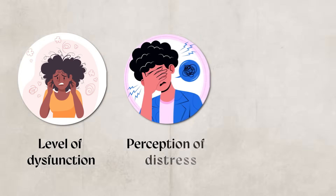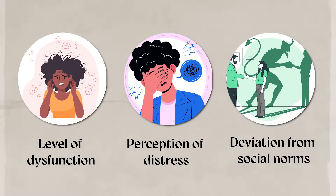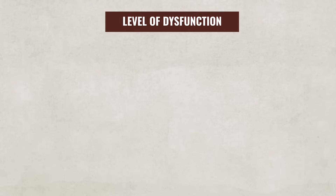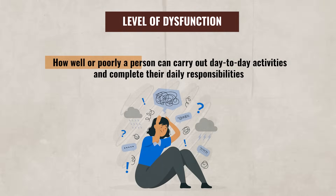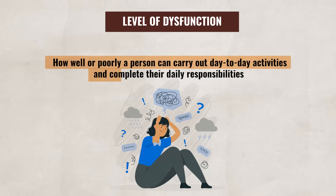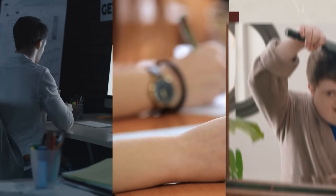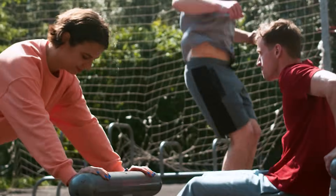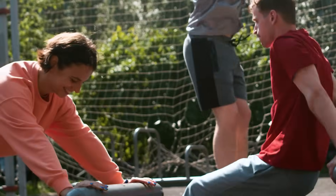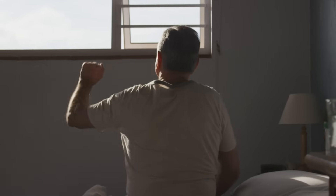When trying to determine if a person's thoughts or behaviors are part of a psychological disorder, mental health professionals will look at a variety of factors, such as the level of dysfunction, perception of distress, and deviation from social norms. A person's level of dysfunction refers to how well or poorly a person can carry out day-to-day activities and complete their daily responsibilities — for example, going to work, school, or taking care of themselves. If an individual's behavior or mental state severely impairs how well they can complete day-to-day activities, it could be a sign that there may be something wrong.